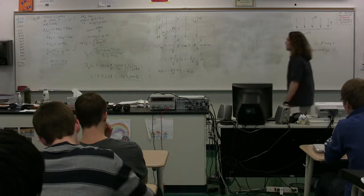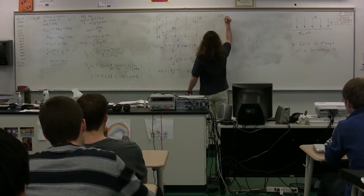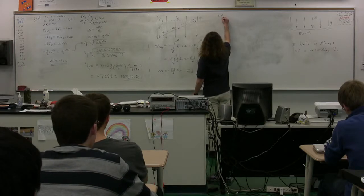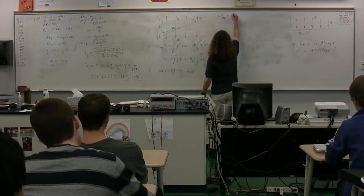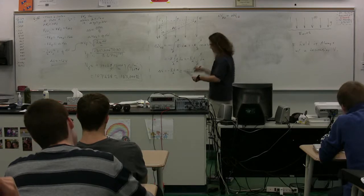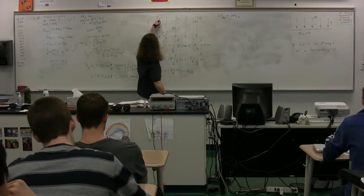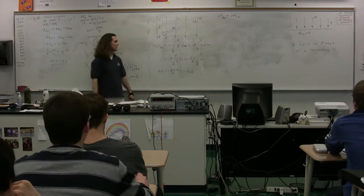So notice that the electric potential difference from A to B is the same as the electric potential difference from C to B. Because we already went through with the last one to figure out if we go in the direction of the electric field, we get negative ED.